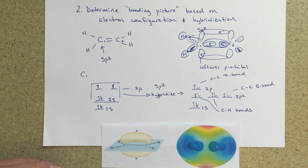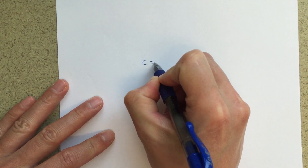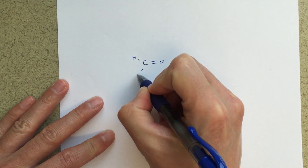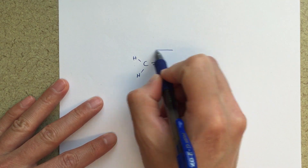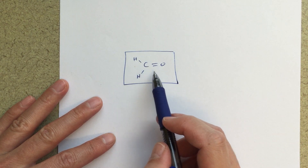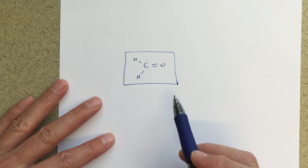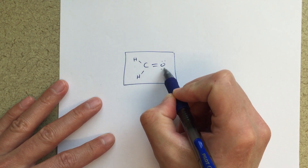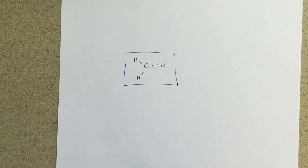The next video will be about formaldehyde. Before watching it, think about the bonding between the carbon and the hydrogen and the oxygen in this molecule. What's going on with the oxygen — since we have a lone pair of electrons, how might we deal with that? In the next video I will talk about this formaldehyde molecule.